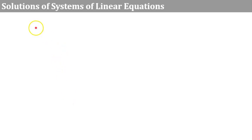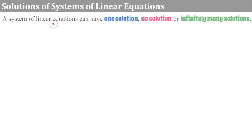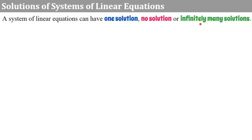Let's begin by talking about the different types of solutions that you can have with a system of linear equations. A system of linear equations can have one solution, no solution, or infinitely many solutions. So when you're given a system of equations, there are three possible outcomes.